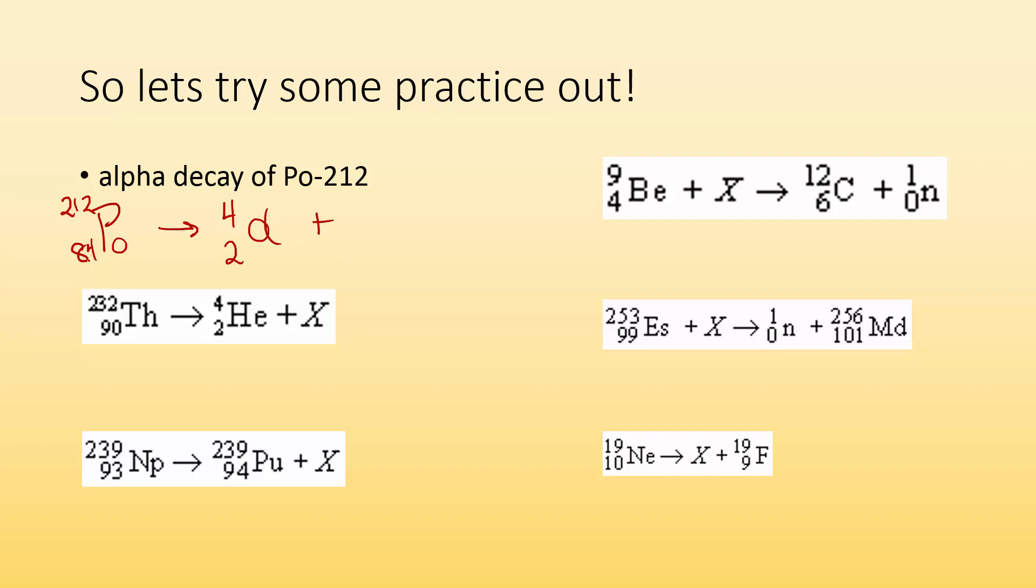84 has to equal two and some number. That's 82. And then I got to do the same thing for the mass. 212 equals 4 and some number. That's 208. Just 208 plus 4 gives me 212. And I look up what element has an atomic number of 82. I'm pretty sure it's lead.